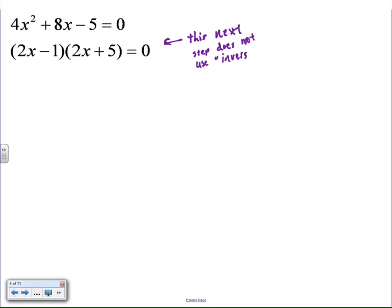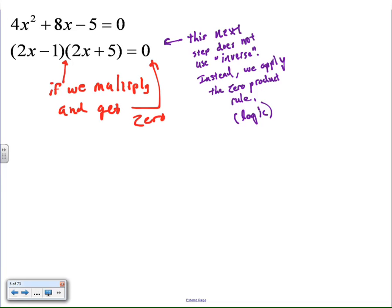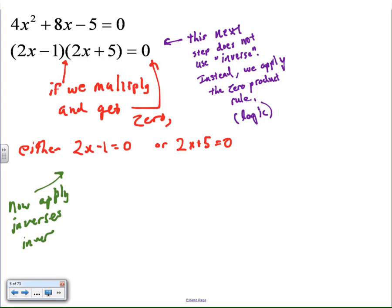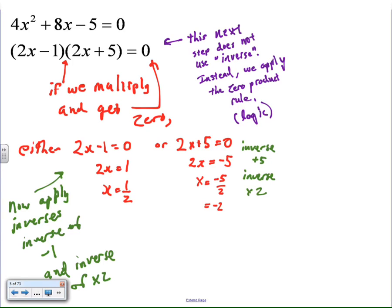The logic here is if two numbers multiply together and zero is the product, then one of the two factors had to be zero. So that's the zero product principle. It's logic, it's not inverse, but that gives us two unique equations, both of which can be solved using inverse principles now. So I'll invert subtract 1, which is add 1. I'll invert multiply by 2, which is divide by 2, and that gives me that solution. Here on the left side, I'll invert add 5, which is subtract 5. Invert multiply by 2, divide by 2, and that gives me two solutions, which I could check on a computer.